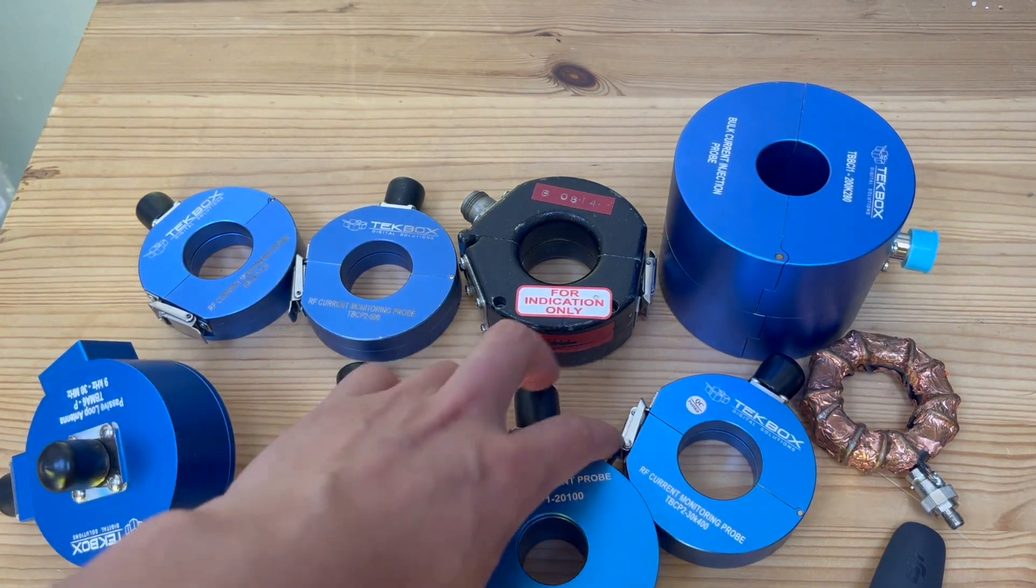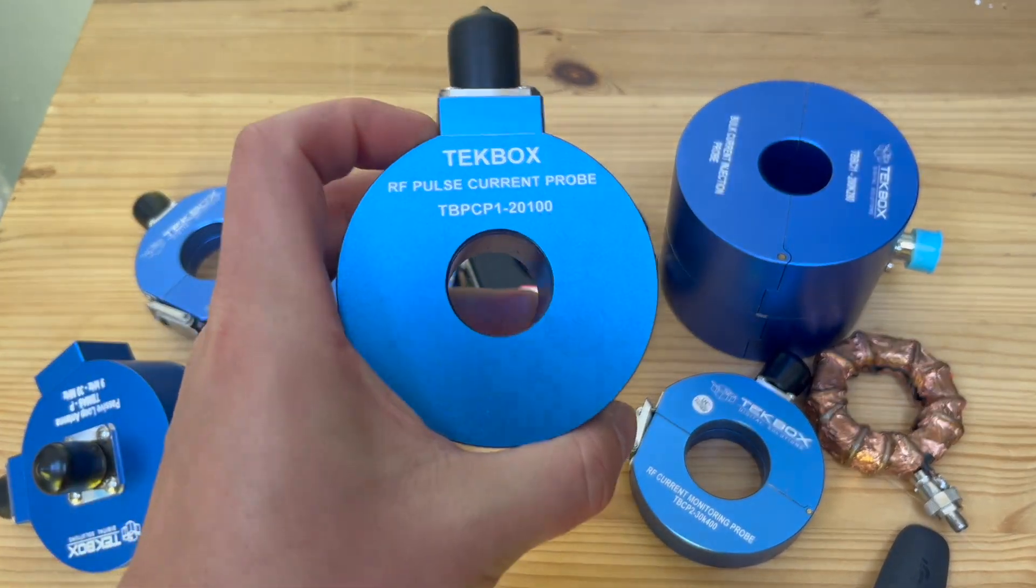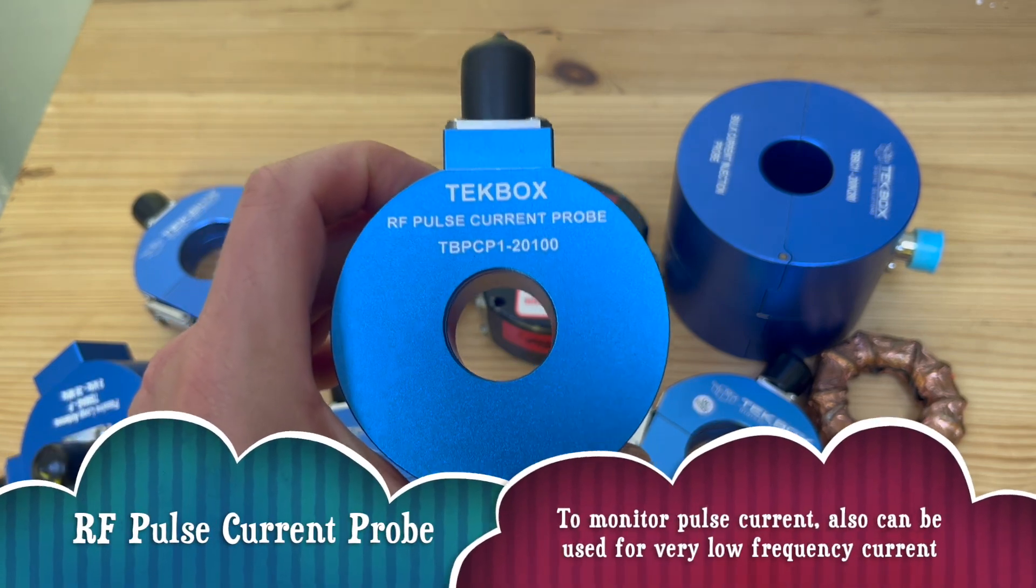You also have this closed loop current probe. There's no hinge design. This actually is a special type of current probe called a pulse current probe.